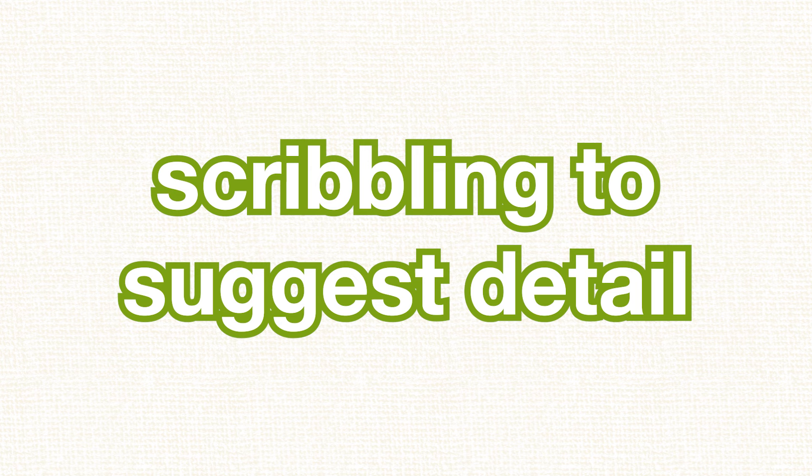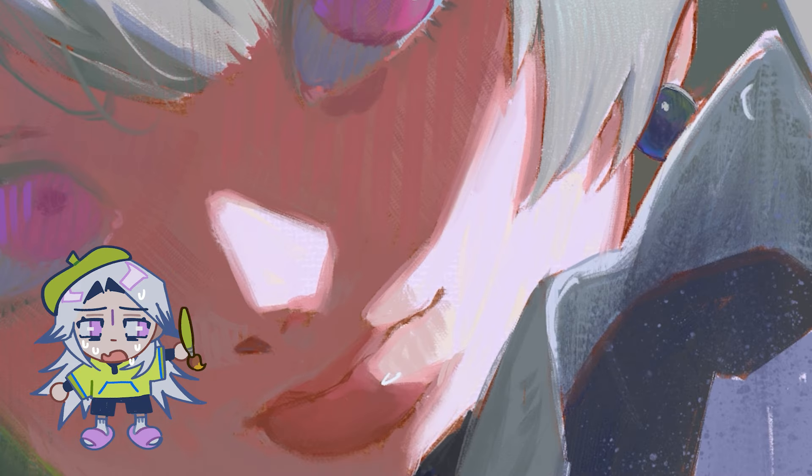The third technique is scribbling to suggest detail. Truthfully, I'm just not the type of person who enjoys doing super perfect rendering — I love looking at it, but I just don't want to do it. It entails using a very thin brush to make details out of scribbles. You can see this most clearly in the sleeve section where I use the oil sketch brush to scribble some lace.